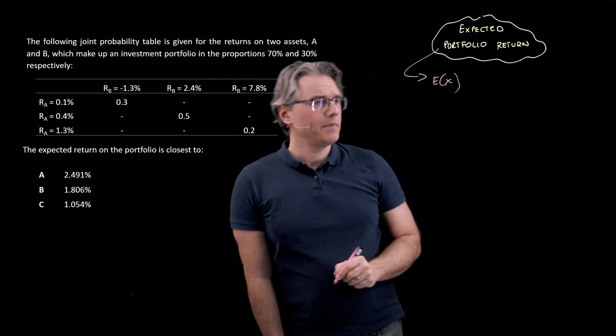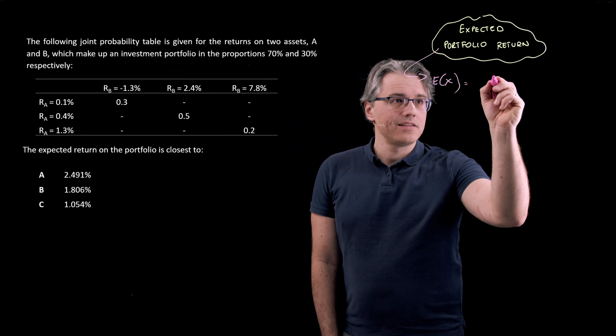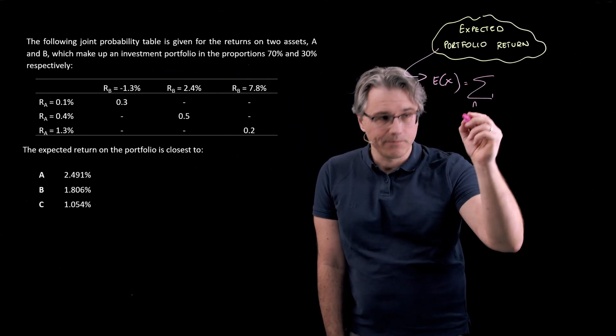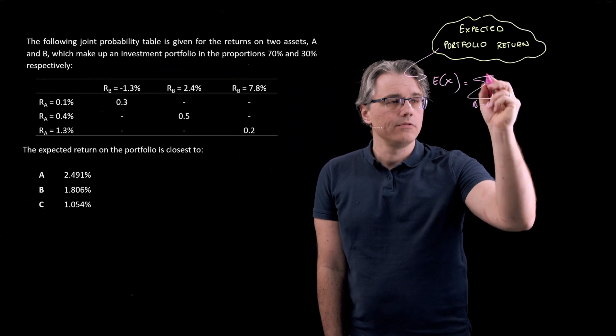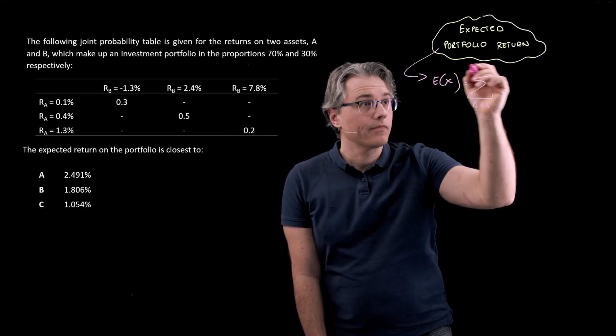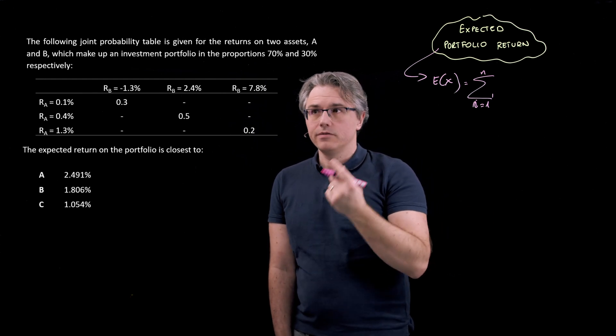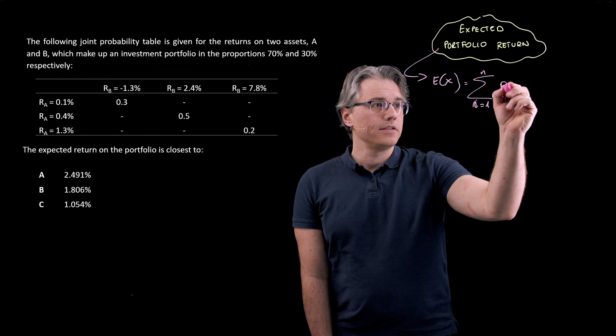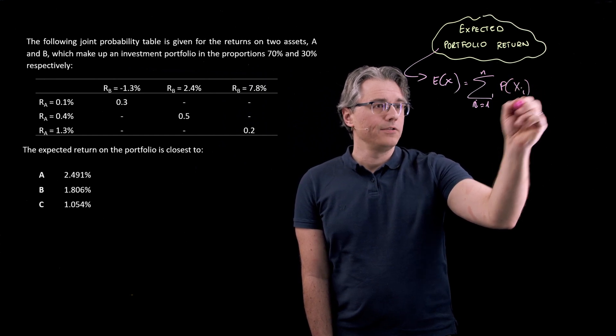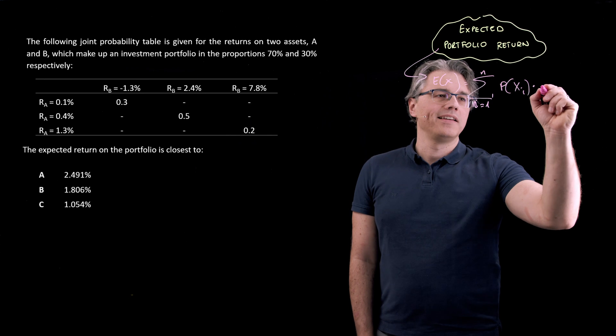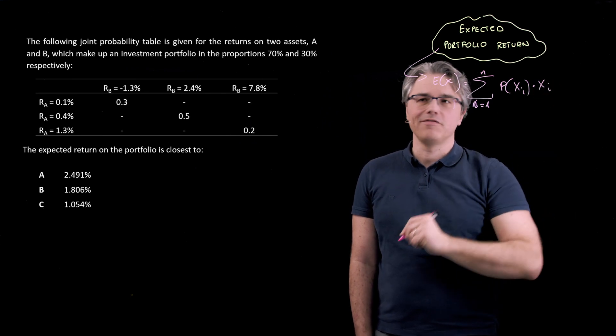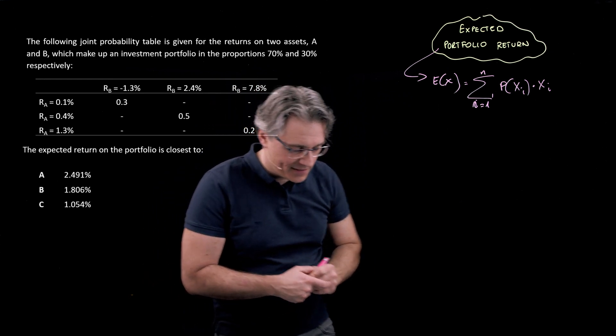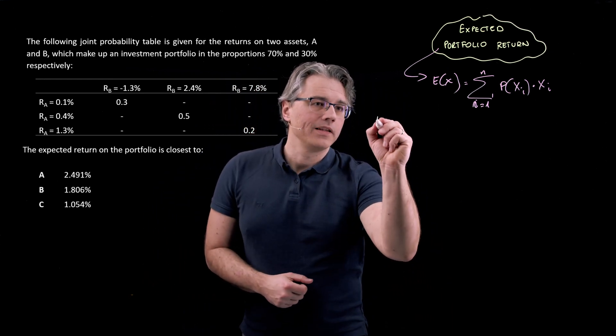Well, the expected value is simply the sum starting with i equals 1, finishing with however many different values we've got, denoted as n. The probability of a certain value happening times that value itself, so xi. And this is a rather complicated way of saying something very, very simple.